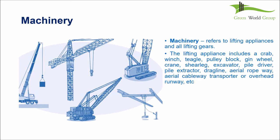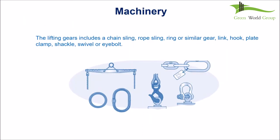Machinery refers to lifting appliances and all lifting gears. Lifting appliances include a crab, winch, teagle, pulley block, gin wheel, crane, sheer leg, excavator, pile driver, pile extractor, dragline, aerial ropeway, aerial cableway, transporter, or overhead runway. Lifting gears include chain slings, rope slings, rings, links, hooks, plate clamps, shackles, swivels, and eye bolts.